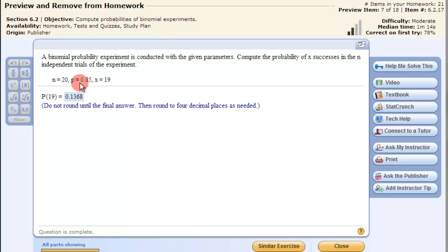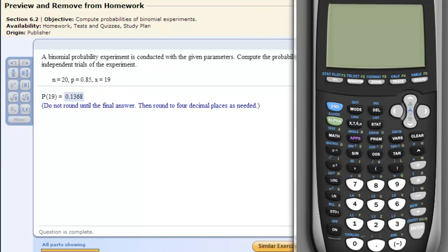They give us N is 20, probability is 0.85, and we want to have 19 successes. So we take our calculator,